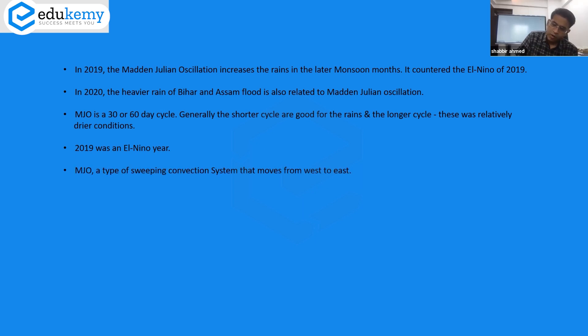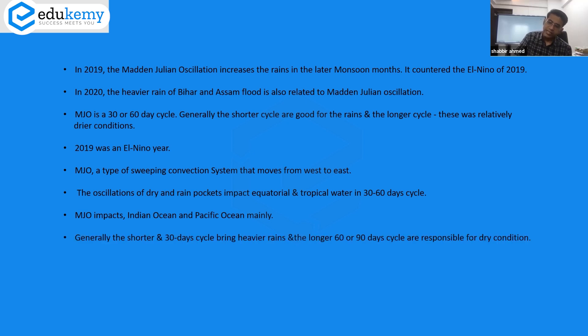If you write down, you basically say MJO: a type of sweeping convection system that moves from west to the east. The oscillations of dry and rain pockets impact equatorial and tropical waters in a 30 or 60 day cycle. MJO impacts Indian Ocean and Pacific Ocean mainly. Generally, the shorter 30-day cycles bring heavier rains. Origin is not well known.